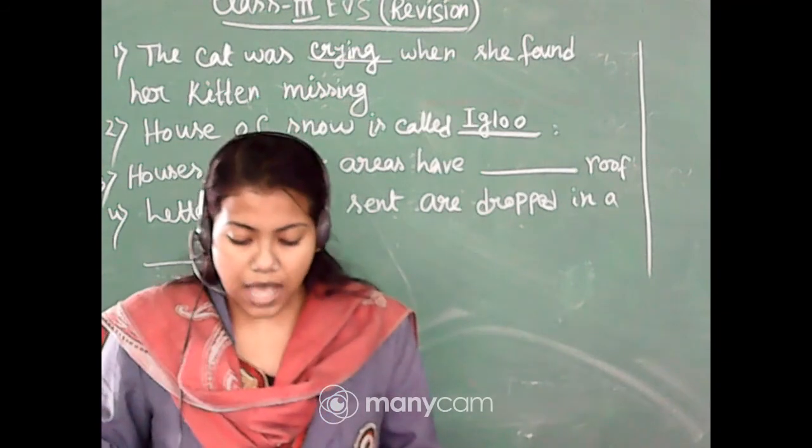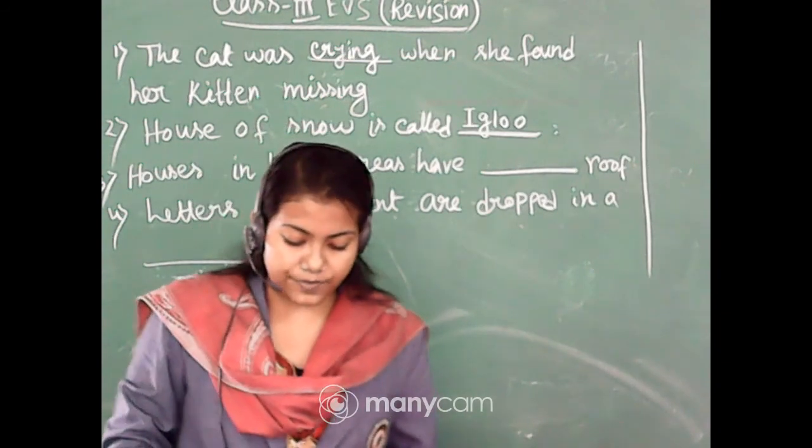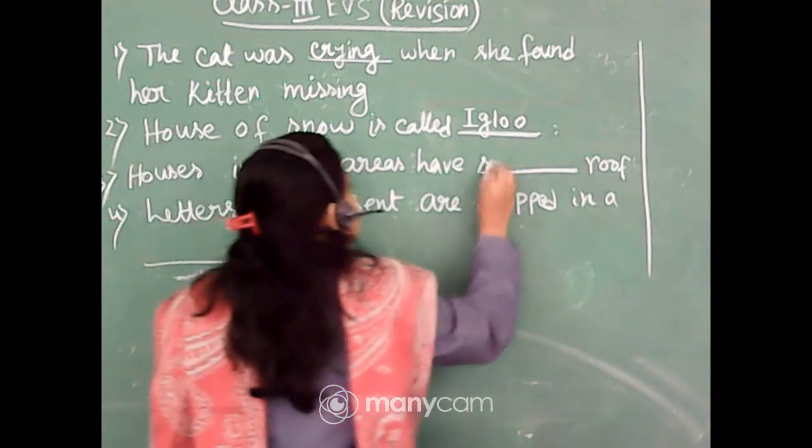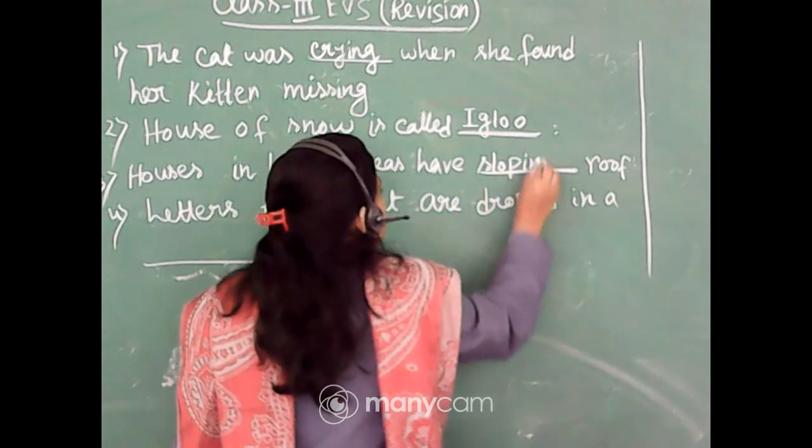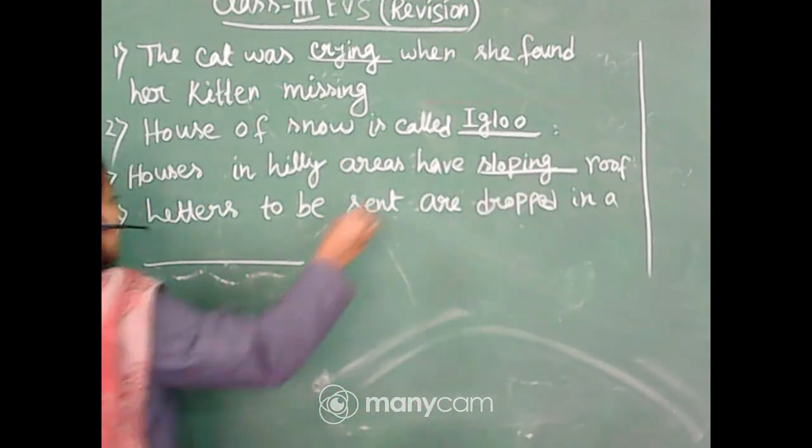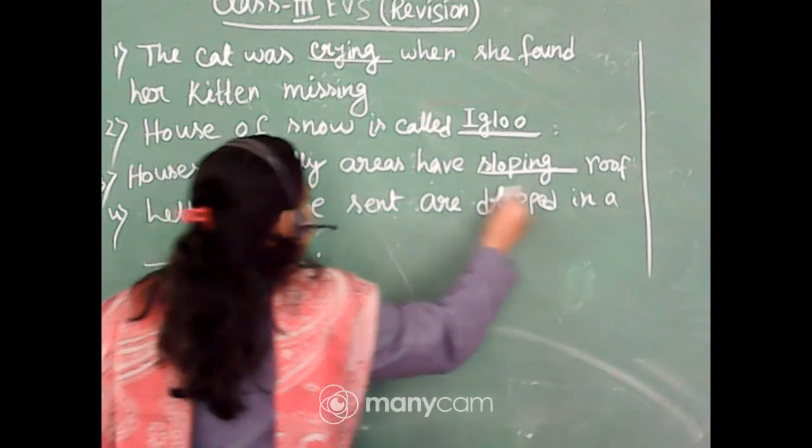round and slopping. So right answer is slopping. S-L-O-P-I-N-G. Houses in hilly areas have slopping roof.